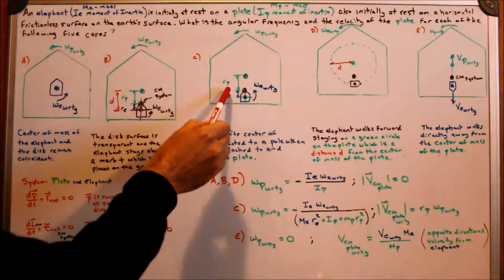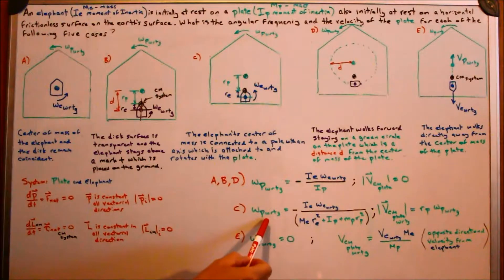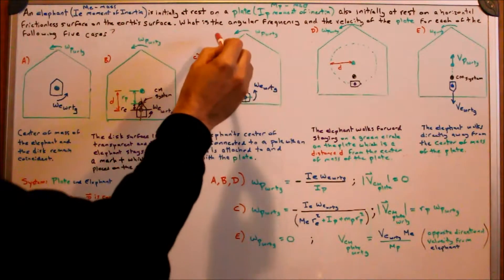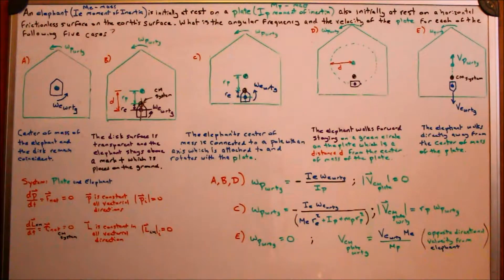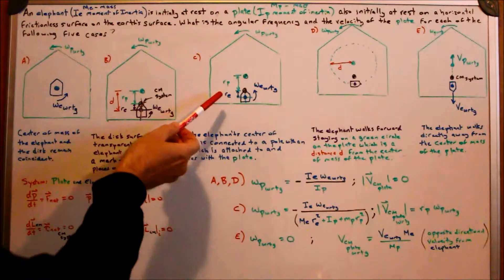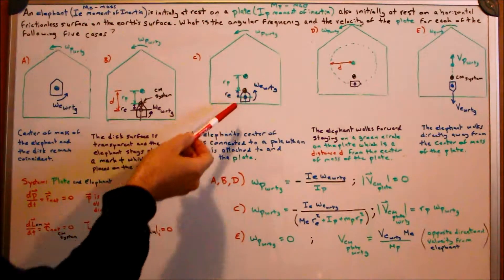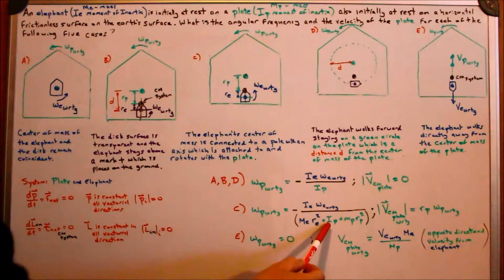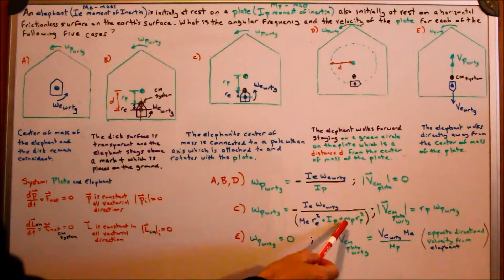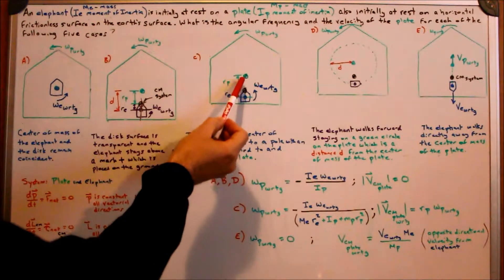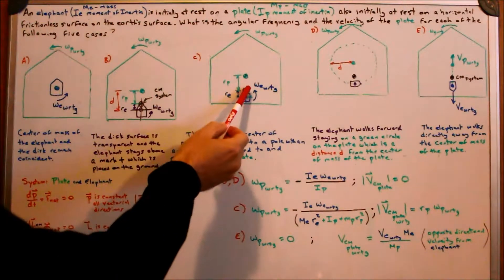For case C, the angular frequency of the plate with respect to ground is also clockwise, and equals the moment of inertia of the elephant times the angular frequency of the elephant with respect to ground, divided by: the mass of the elephant times R sub E squared (where R sub E is the distance between the center of mass of the elephant and the center of mass of the system), plus the moment of inertia of the plate with respect to its center, plus the mass of the plate times R sub P squared (where R sub P is the distance from the center of mass of the plate to the center of mass of the system).